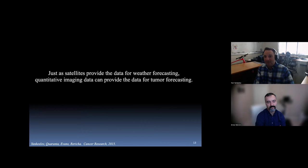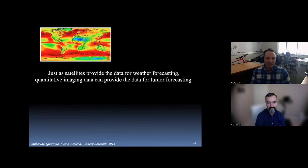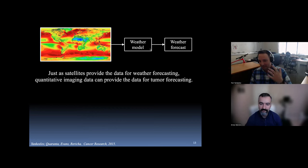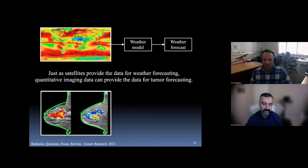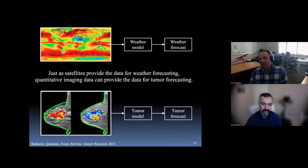And the metaphor that we've been telling now for almost a decade, but I think it's a powerful one, is just as satellites provide the data for weather forecasting, quantitative imaging data can provide the data for tumor forecasting. So this is a global map of humidity. You'll have a global map of pressure gradients and wind velocities and all these kinds of things go into the Navier-Stokes equations to make a weather forecast. We have, for example, the measurements we just talked about, the perfusion and the cellularity going into some kind of tumor model to make a tumor forecast. So I'm curious, how did this come to you?